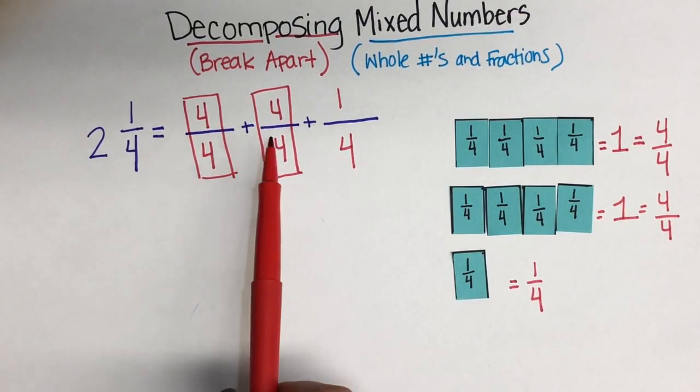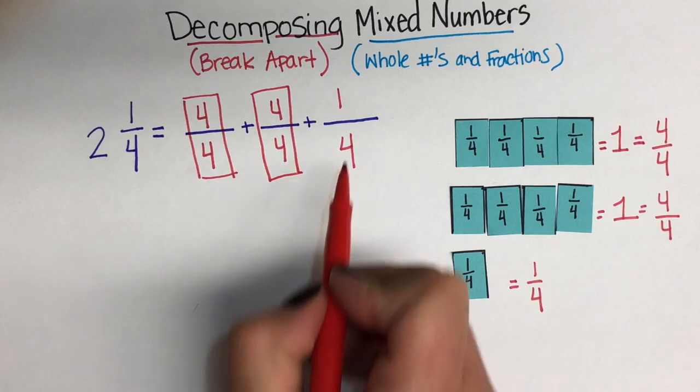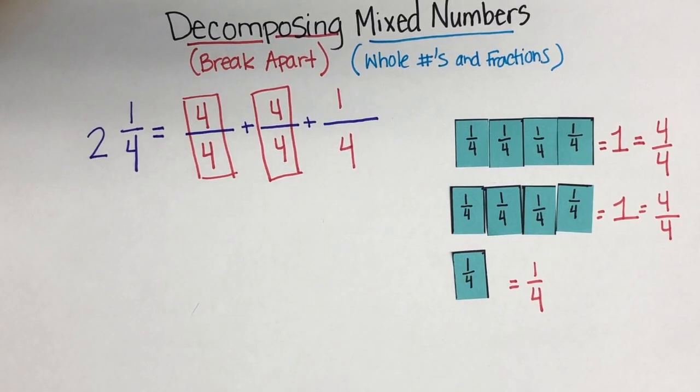So, here you have one example, one way. 1 whole, 1 whole plus 1/4 makes 2 and 1/4. And that's that for this example. We just broke apart or decomposed 2 and 1/4 into 3 fractions.